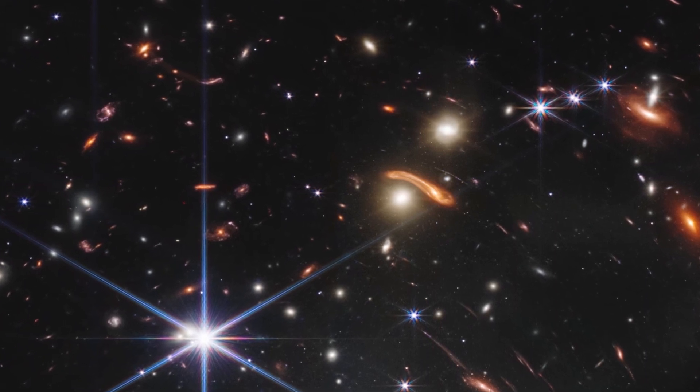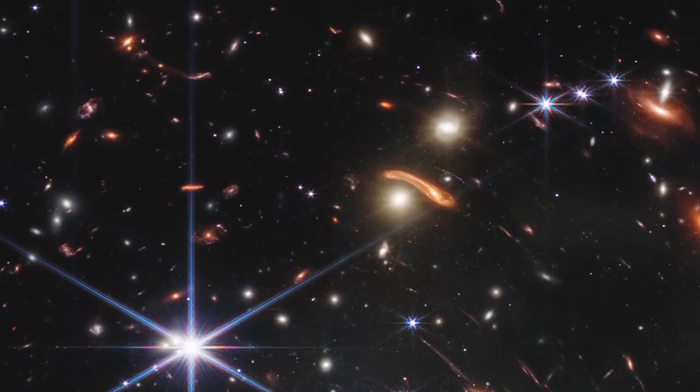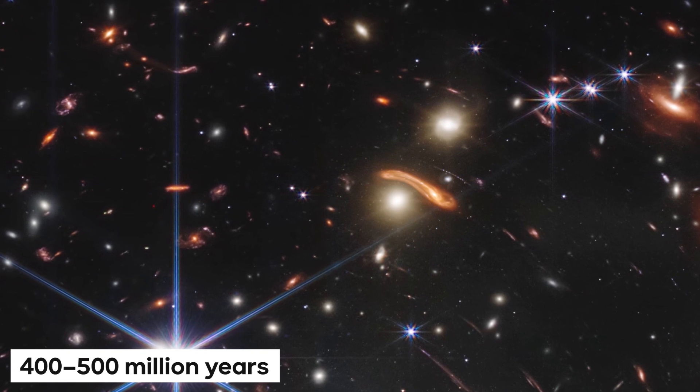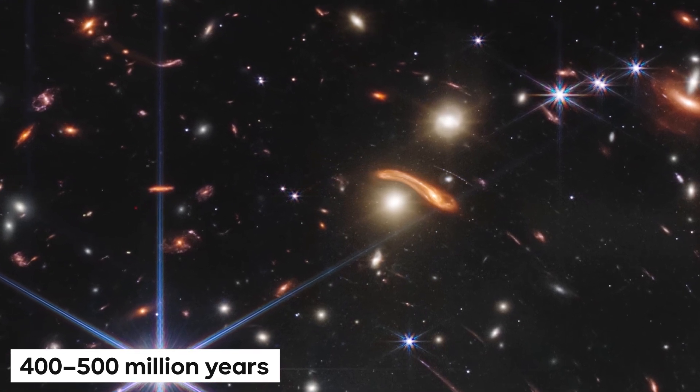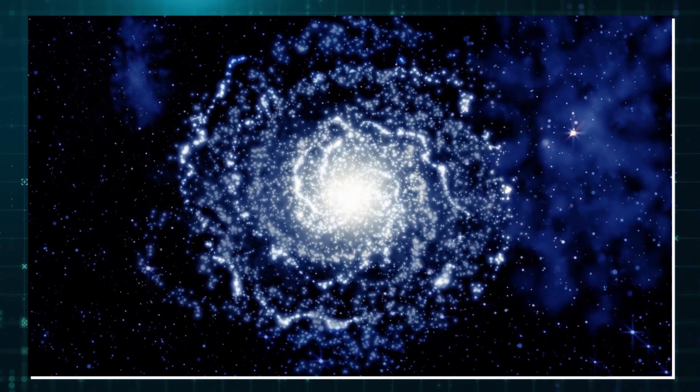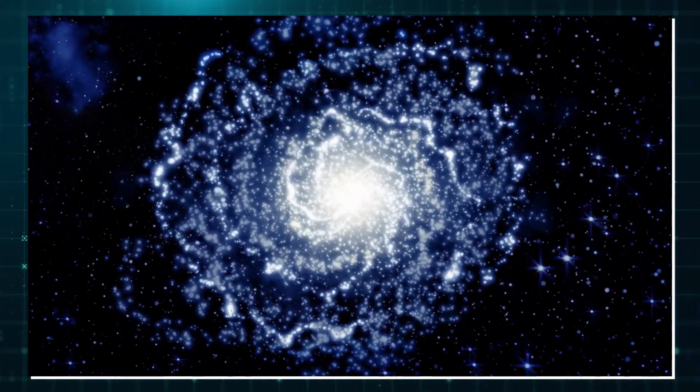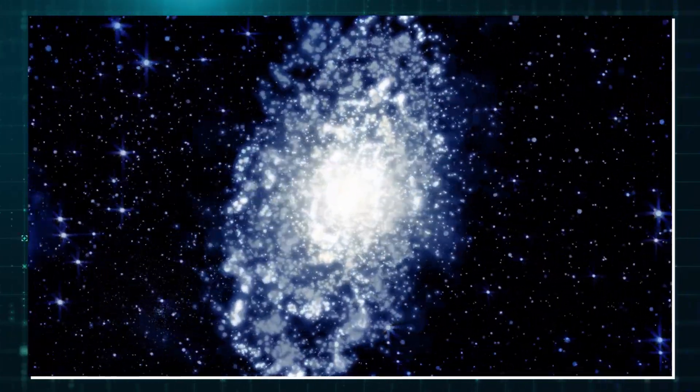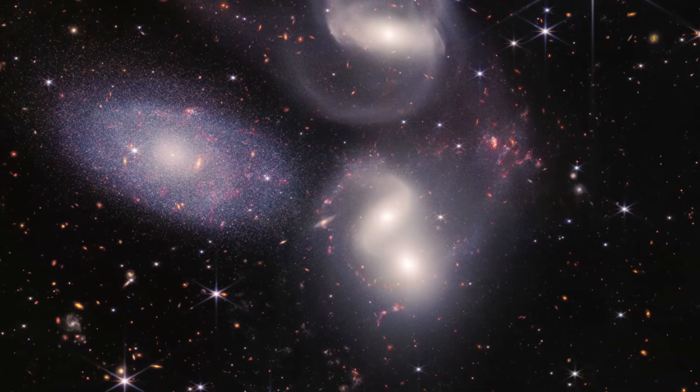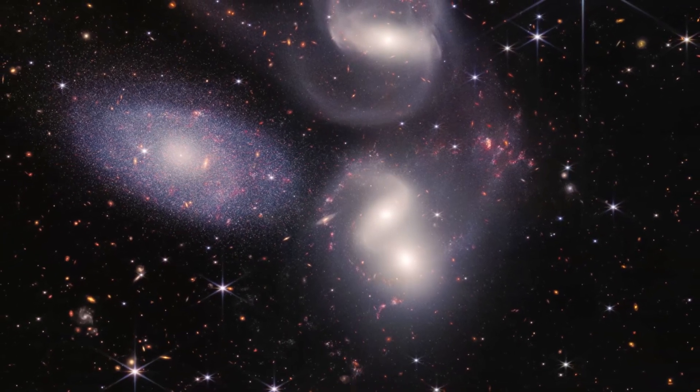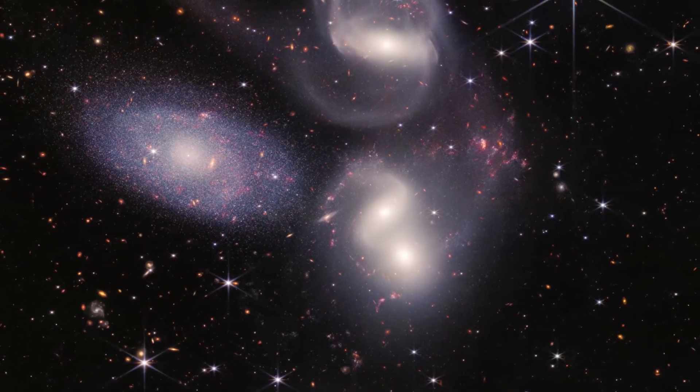The furthest galaxies in the JWST's images are viewed as they were only 400 to 500 million years after the beginning of the universe, in accordance with the Big Bang Theory. However, some galaxies have already revealed star populations that are more than a billion years old. The presence of these galaxies once again proves that the Big Bang did not actually happen, as nothing could have started before it.